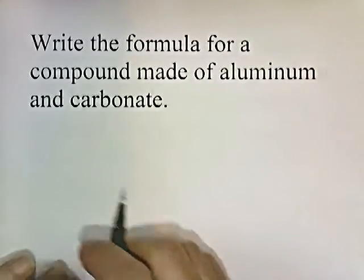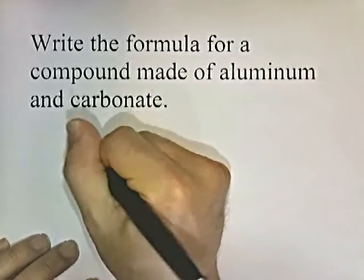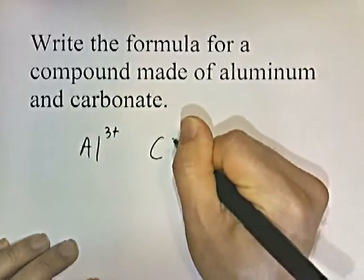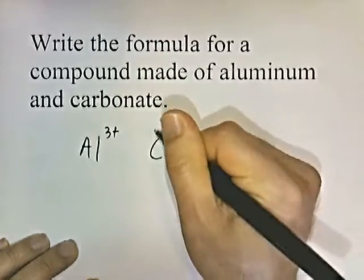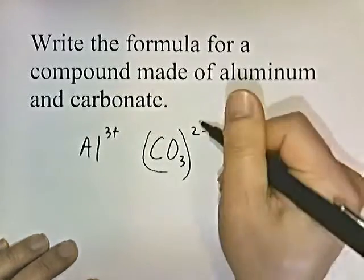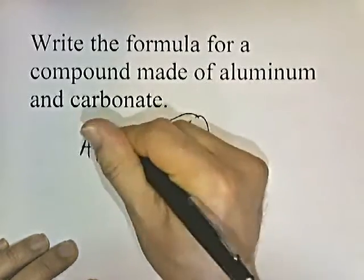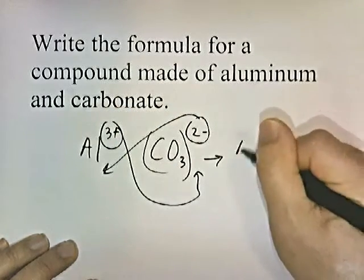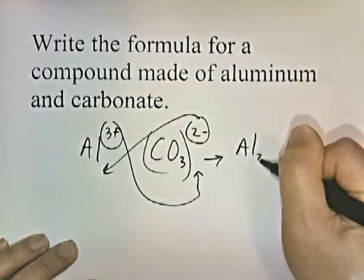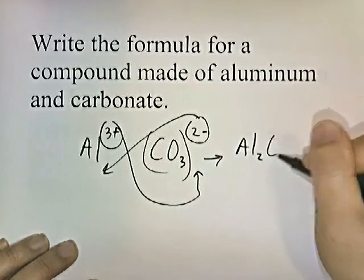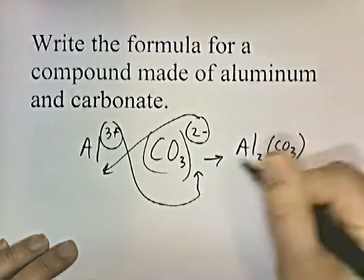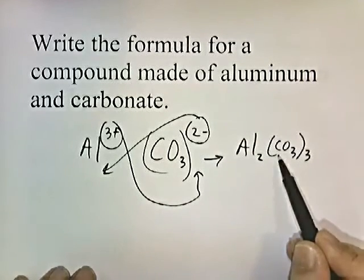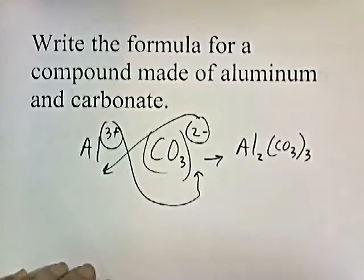Write the formula for a compound made out of aluminum and carbonate. Aluminum is group three (plus three). Carbonate is CO3 with a negative two charge. Put parentheses around it and criss-cross the numbers. The result is Al2(CO3)3, meaning there are three carbonate ions attached to two aluminum ions.